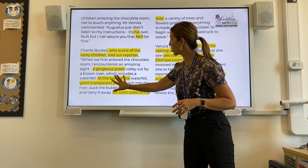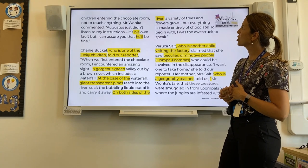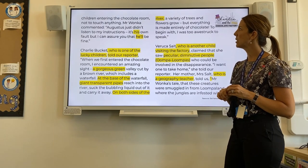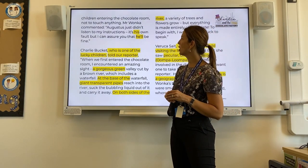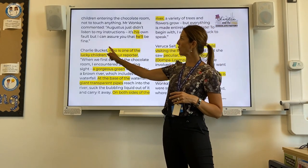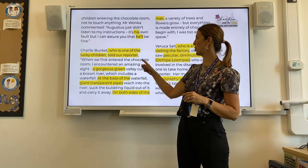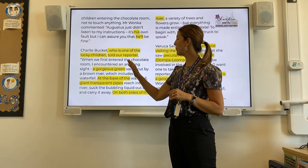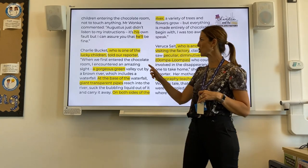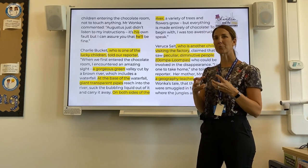That takes me to the second slide of the news report. Again, I can see the structure — my two columns — I can see a paragraph and an image. Children entering the chocolate room were told not to touch anything. Mr Wonka commented, 'Augustus just didn't listen to my instructions. It's his own fault. But I can assure you that he'll be fine.' Again, the pronouns coming through. Next paragraph: Charlie Bucket, who is one of the lucky children, told our reporter. 'When we first entered the chocolate room, I encountered an amazing sight — a gorgeous green...' You can spot that technique — alliteration! They tend to use those in a news report; it's another technique that grabs the reader's attention.